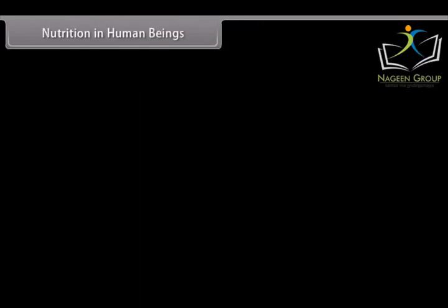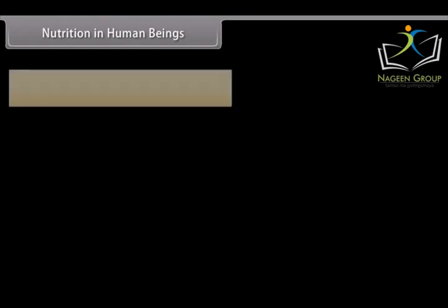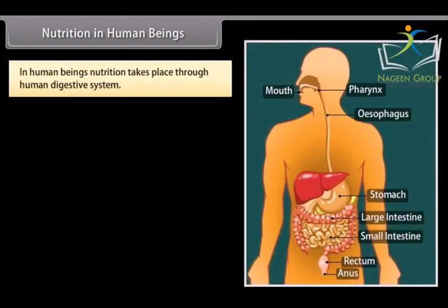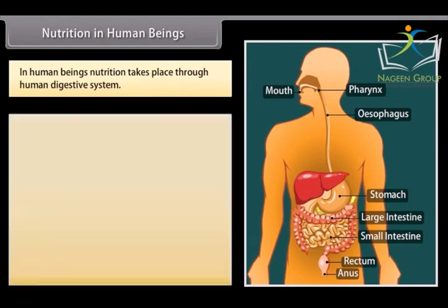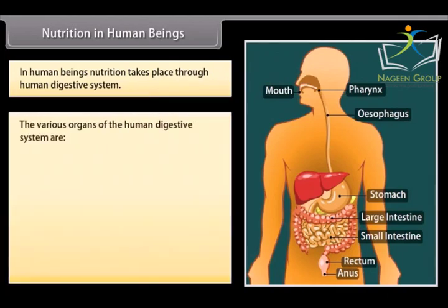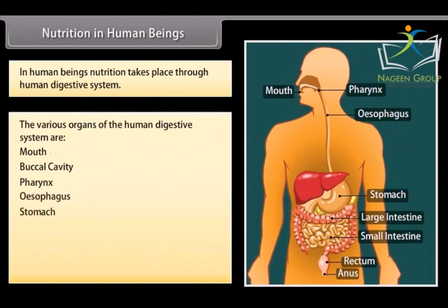Nutrition in human beings takes place through the human digestive system. The various organs of the human digestive system are: mouth, buccal cavity, pharynx, esophagus, stomach, small intestine, large intestine, rectum, and anus.